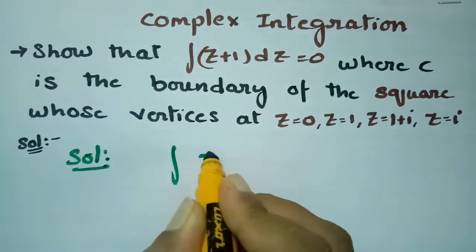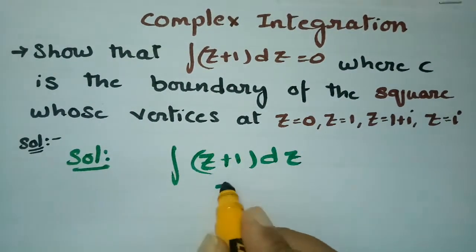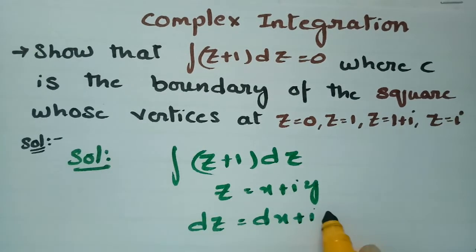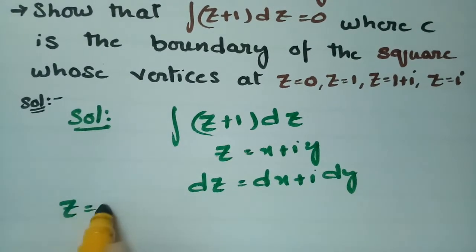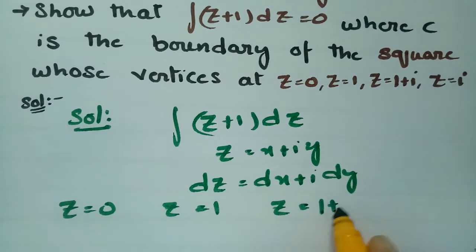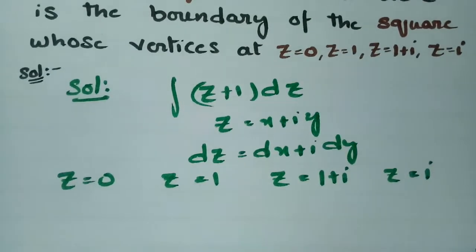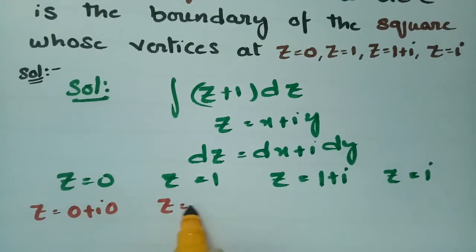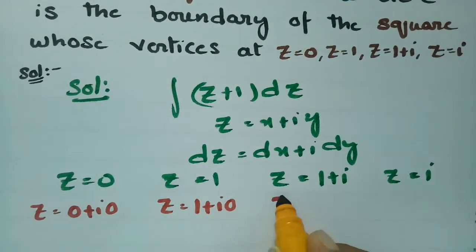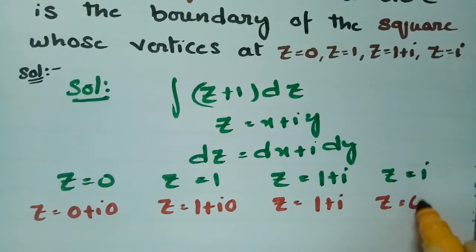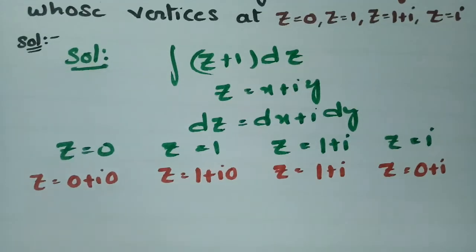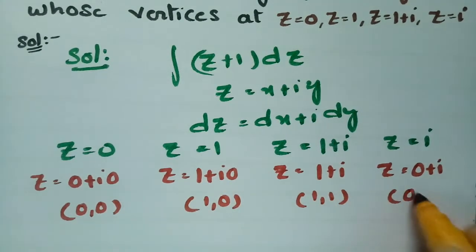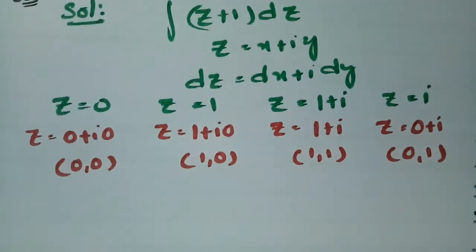The integral given is (z+1) dz. As you know, z is nothing but x + iy, and dz = dx + i·dy. The given vertices are z=0, z=1, z=1+i, and z=i, which correspond to coordinates (0,0), (1,0), (1,1), and (0,1) in the xy-plane.